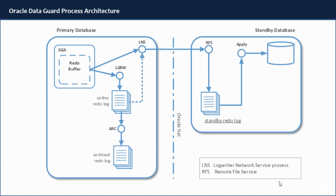Although standby RedLog files are technically optional, in almost every production system they are there and configured in a Data Guard environment. You would also have Apply Services — a process responsible for Apply Services will read from the standby RedLog files and apply the RedLogs into the standby database. This architecture maintains unidirectional replication from the primary database to the standby database, and as it is clear, it relies on sending the RedLog from the primary database to the standby database.